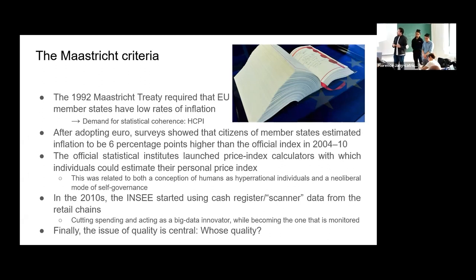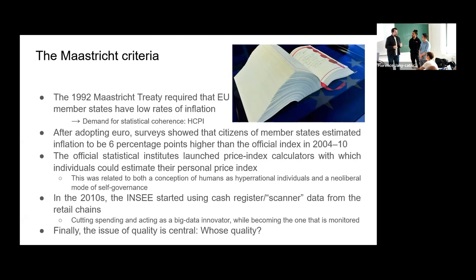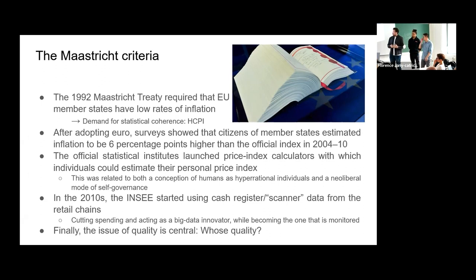Around this time, statistical organizations introduced individual price calculators — so people could calculate their own price index. This was related to a hegemonic conception of humans as hyper-rational individuals and a new neoliberal mode of self-governance, so people could check for themselves rather than relying on centralized estimates. In the 2010s, INSEE also started using cash register and scanner data from retail chains, which can be seen as both a cost-cutting measure and an attempt to appear as a big data innovator.